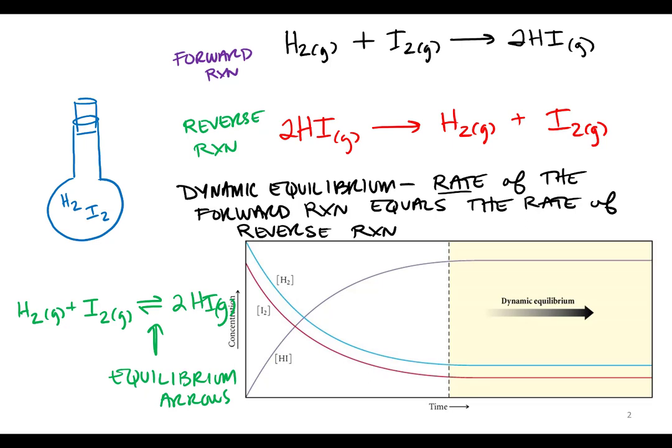We started talking about equilibrium yesterday, and we found out that that is when we have a reversible reaction — a reaction that can go from reactants to products, and the products can go back and make more of the reactants. That's the reversible reaction.